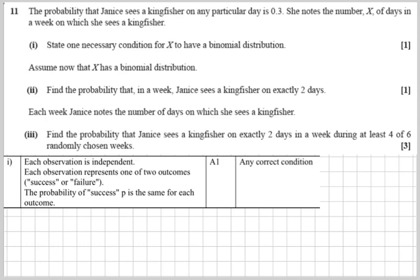Okay, then we get a bit more interesting. Find the probability that in a week, so in seven days, seven trials that is, Janice sees a kingfisher on exactly two days.